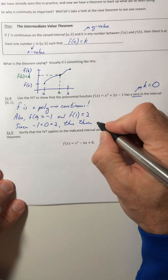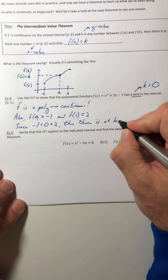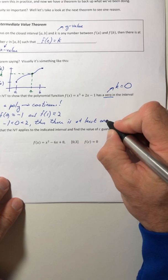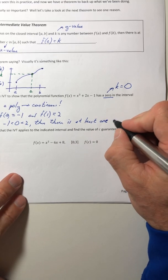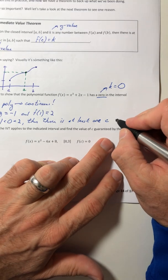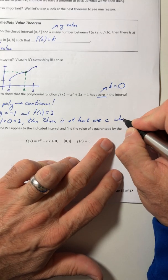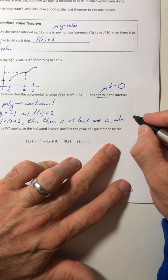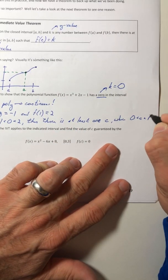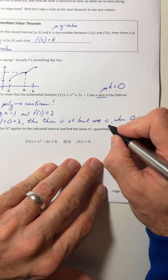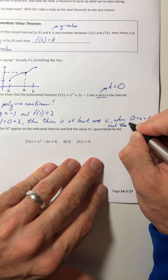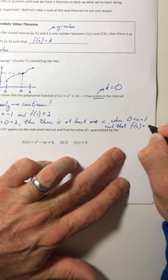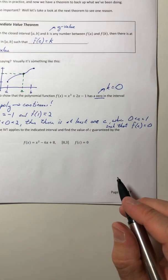Then there is at least one c, where c is in between zero and one, such that f(c) is equal to zero.